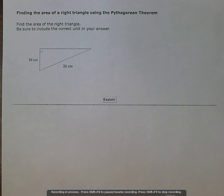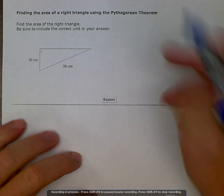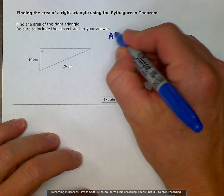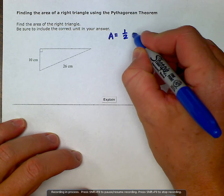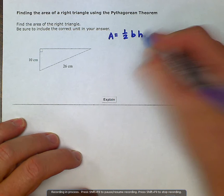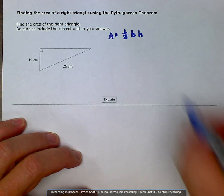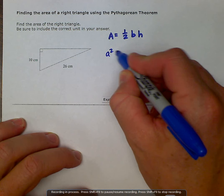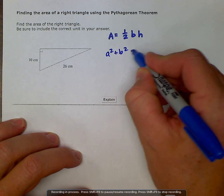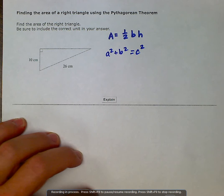So here we're asked to find the area of the right triangle using the Pythagorean Theorem. A couple of things that we need: we need to know the area formula for a triangle, which is one-half times base times height, and we also need to know our Pythagorean Theorem, which says a squared plus b squared is equal to c squared,